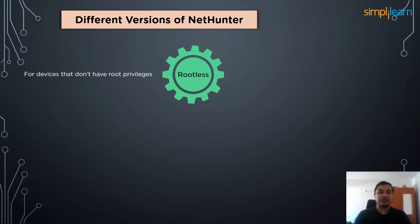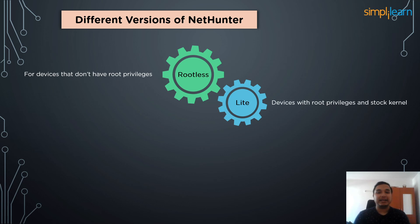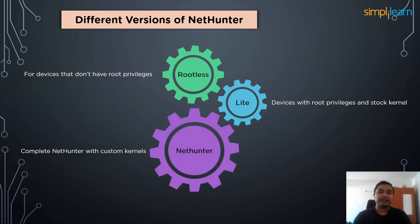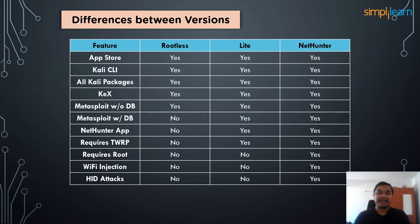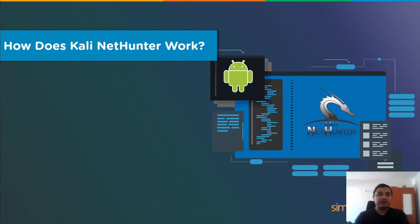The first of the three versions NetHunter provides is NetHunter Rootless, which works on almost all devices without any issues, though it has the lowest number of available tools among the three. We then have NetHunter Lite, which requires root privileges to work properly; it doesn't need any custom kernel flashing and has comparatively more tools than NetHunter Rootless. Finally, we have the original NetHunter package with all tools available, but your device must have root privileges and the custom NetHunter kernel installed. The more open your device settings are, the more tools Kali NetHunter can work with, as root privileges provide administrative access to many functionalities.